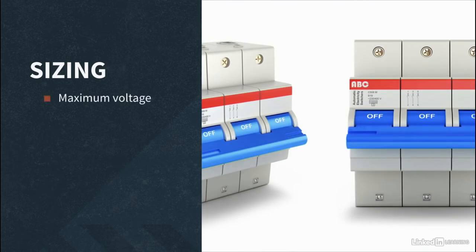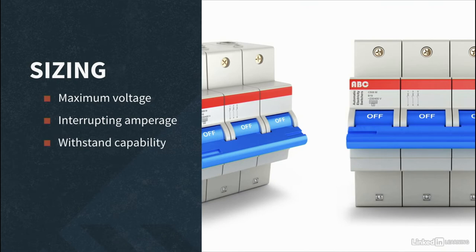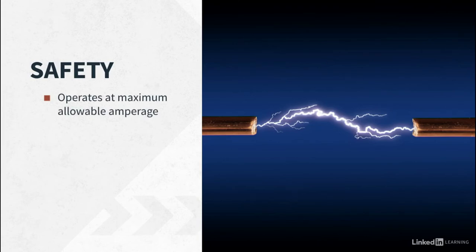The trip unit. Circuit breakers are sized based on maximum voltage, interrupting amperage, the desired level at which they shut off, and withstand capability. The trip unit is specifically designed to operate the circuit breaker at the maximum allowable amperage.